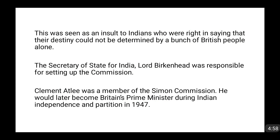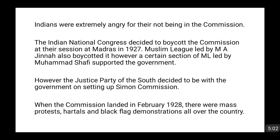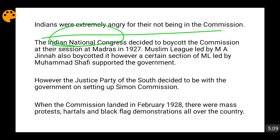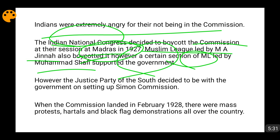Indians were obviously very angry about being excluded from the commission. The Indian National Congress boycotted the Simon Commission in every form, publicly boycotting it at its Madras session in 1927. The Muslim League led by Muhammad Ali Jinnah also boycotted it. However, a faction of the Muslim League led by Muhammad Shafi supported the government on the Simon Commission, as did the Justice Party of the South. These two factions were the main supporters; apart from them, nobody else supported the Simon Commission.